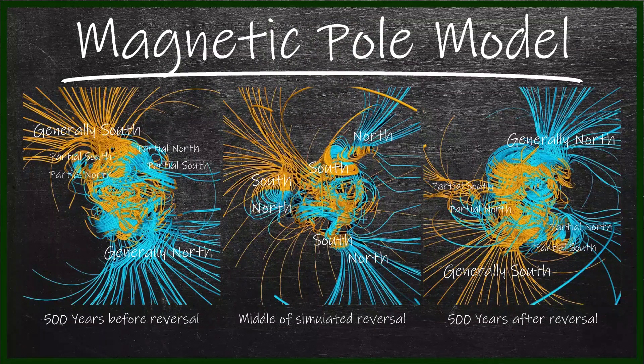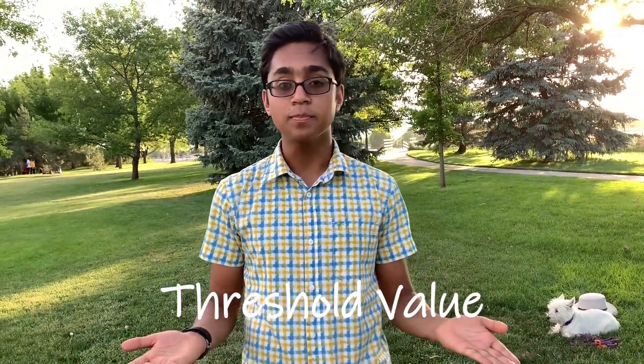So what could cause this pole reversal? Simply put, we don't really know. Simulations of the complex dynamics in the outer core have predicted pole switches, but as random events. What we do know is that during a reversal, the Earth's magnetic field reduces to around 10% of its strength, or its threshold value. This reversal could take a few thousand years to take place.